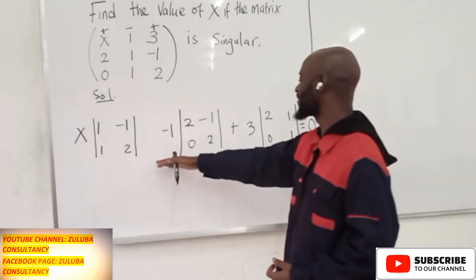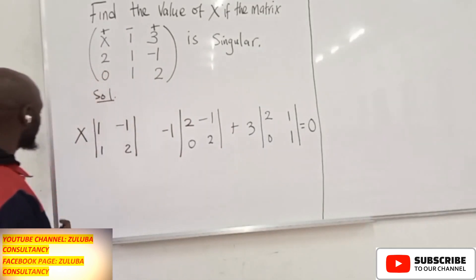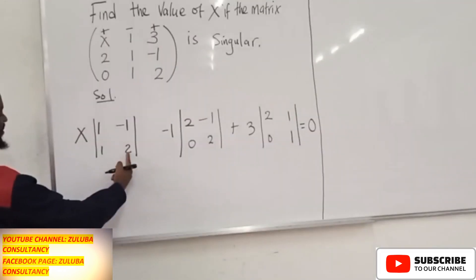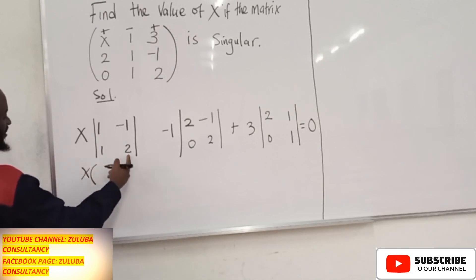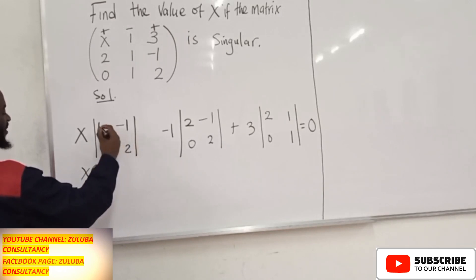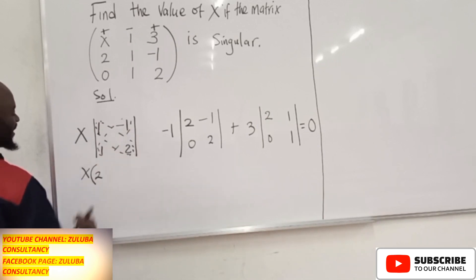We proceed and evaluate this and find the value for X. This will be 2 times this one, the value of X. 2 times this one, you get 2. You get minus 1 when you multiply this. Remember the determinant for a 2 by 2 matrix: it's the major diagonal product minus the minor diagonal product.